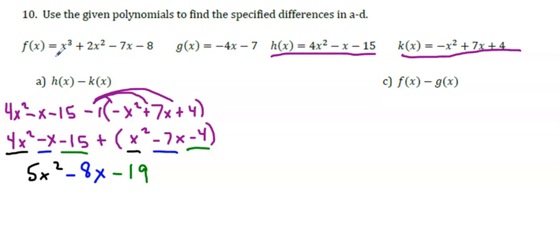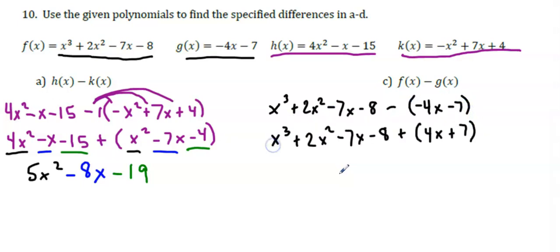Now let's subtract. We'll do f(x) - g(x). So to get started, I'm going to list this as x³ + 2x² - 7x - 8 minus (-4x - 7). I'm going to rewrite this as an addition problem. I'm going to show you how you can stack the expressions. So I'm going to list the first one here.